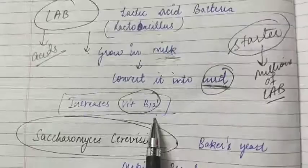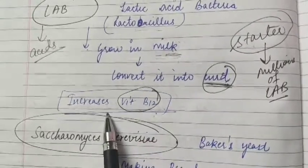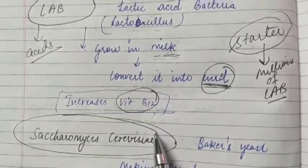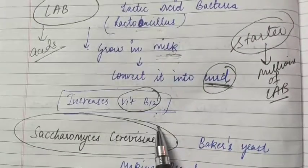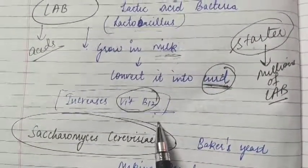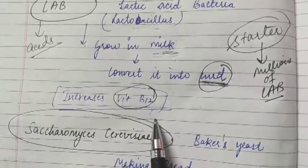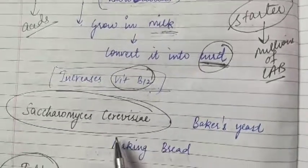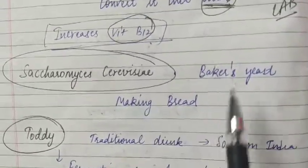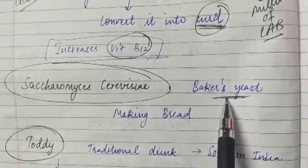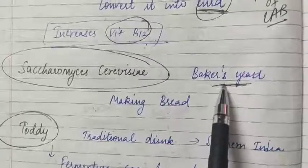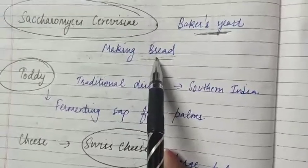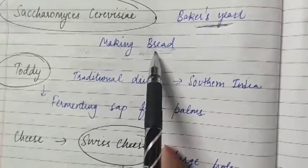The dough is made to puff up due to CO2 gas produced by yeast. We can use this dough to make bread. Baker's yeast, which is called Saccharomyces cerevisiae, is also helpful for making bread.